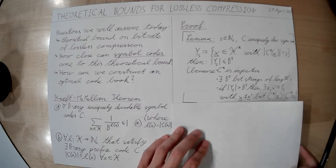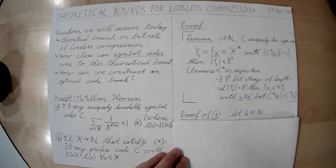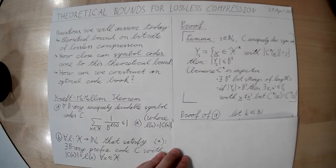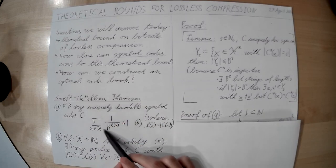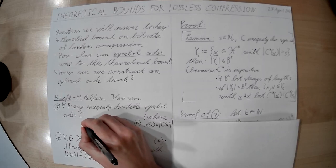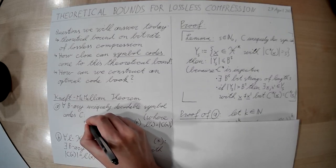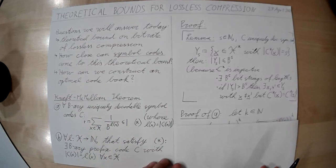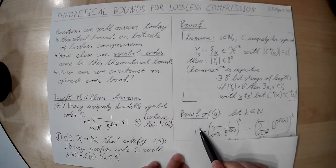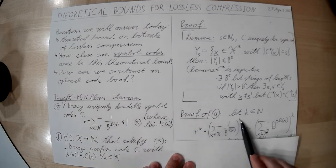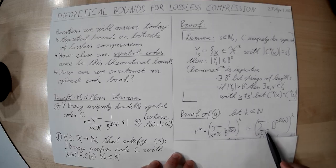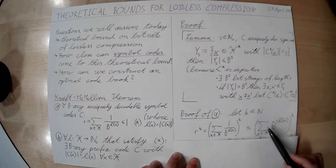Now let's go to the proof of part A. Take some integer k, and define the left-hand side of the Kraft inequality as r. I'm going to calculate r^k. So r^k — I can take this expression, take the power of k, and rewrite 1/b^{L(x)} as b^{-L(x)} to save space. Then r^k is the sum over all symbols b^{-L(x)}, all taken to the power of k.